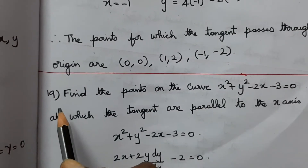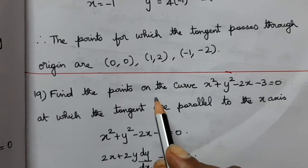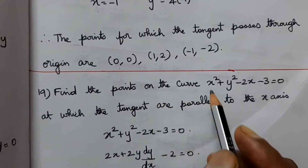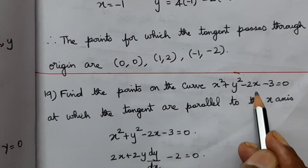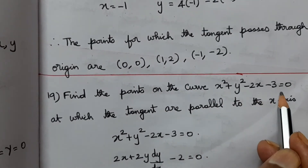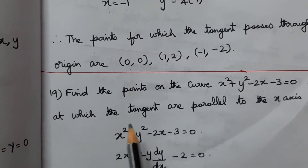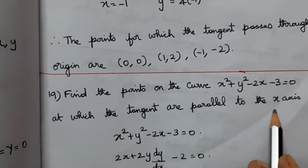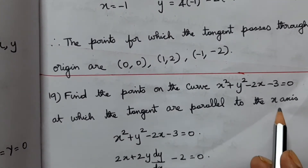Problem 19: Find the points on the curve x² + y² - 2x - 3 = 0 at which the tangents are parallel to the x-axis.